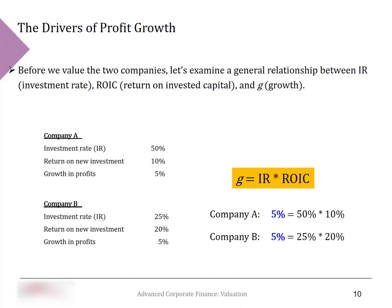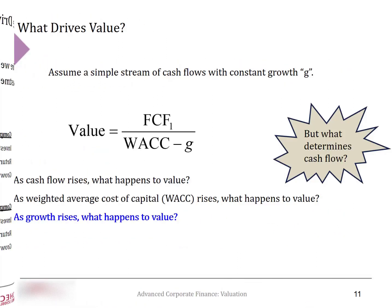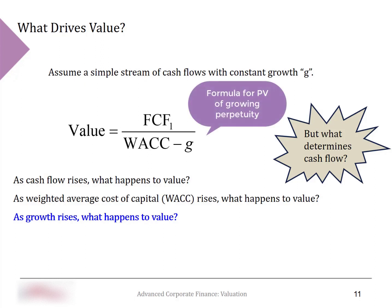To show this more formally, let's assume a simple cash flow with constant growth rate G. The present value of this stream can be written as the cash flow in year one divided by the cost of capital minus the growth rate G.